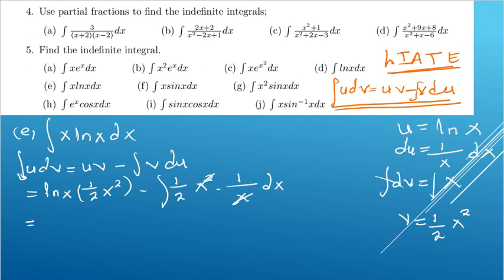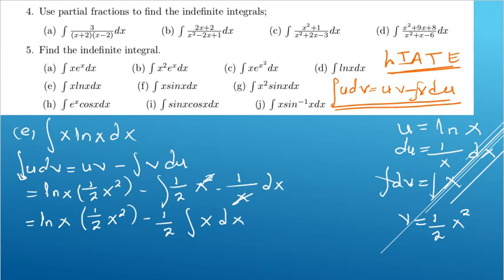Notice that x² and 1/x simplify: one power of x cancels. We can factor out the constant 1/2, leaving the integral of x dx. So we get (1/2)x²·ln(x) minus (1/2) times the integral of x dx.